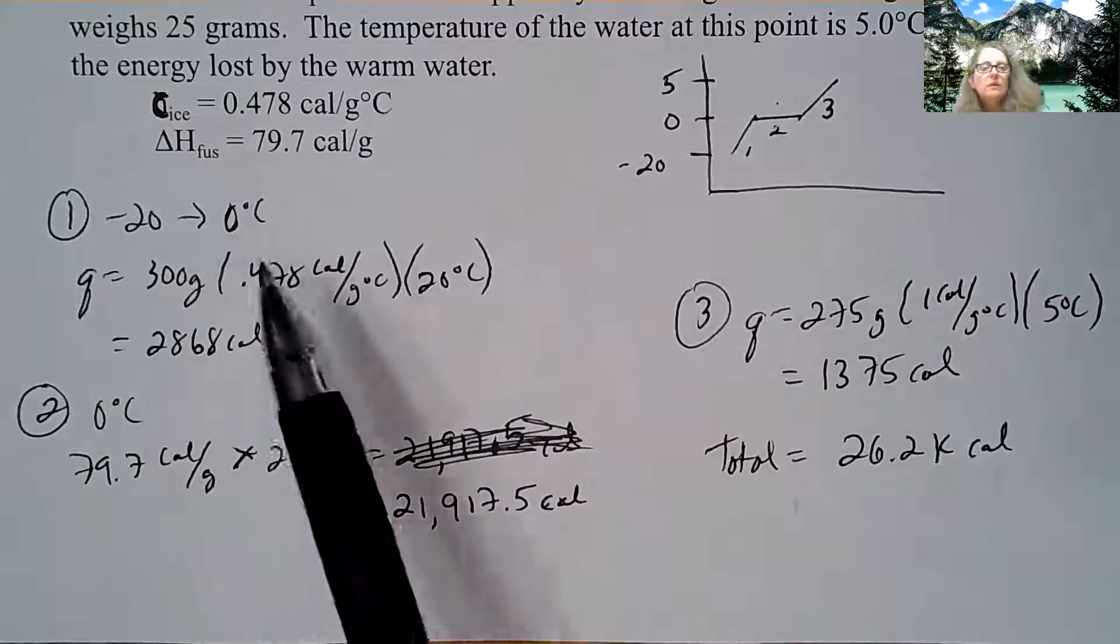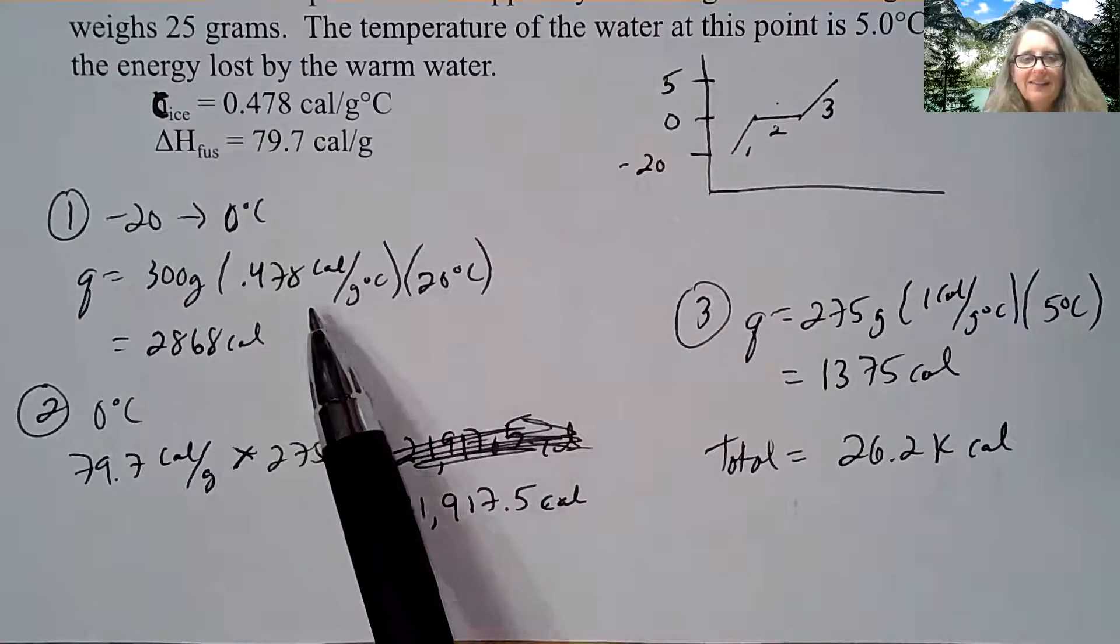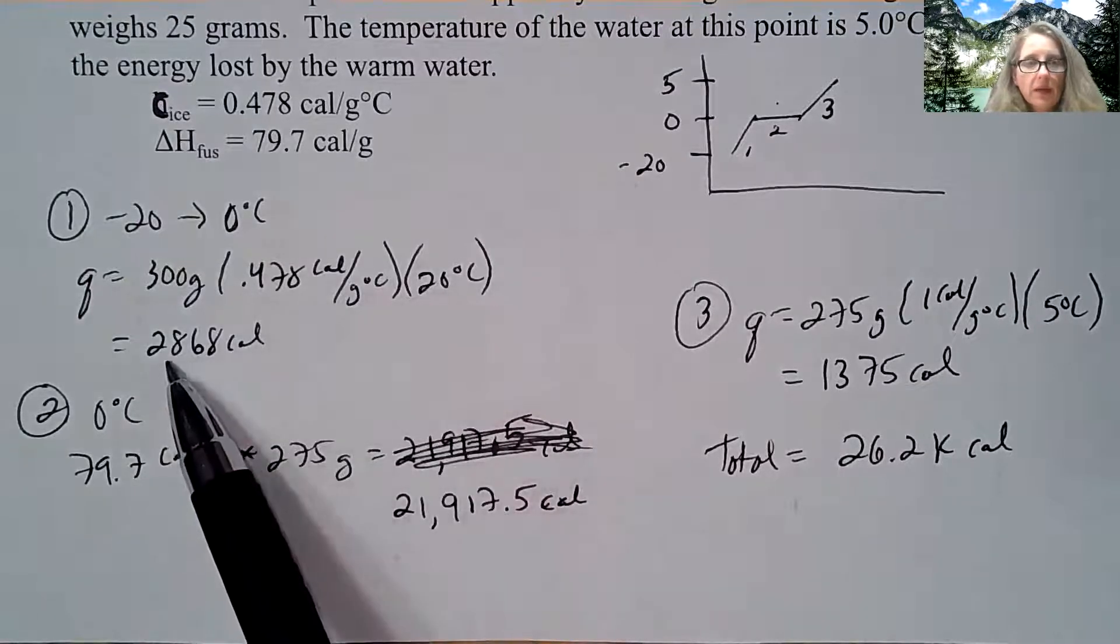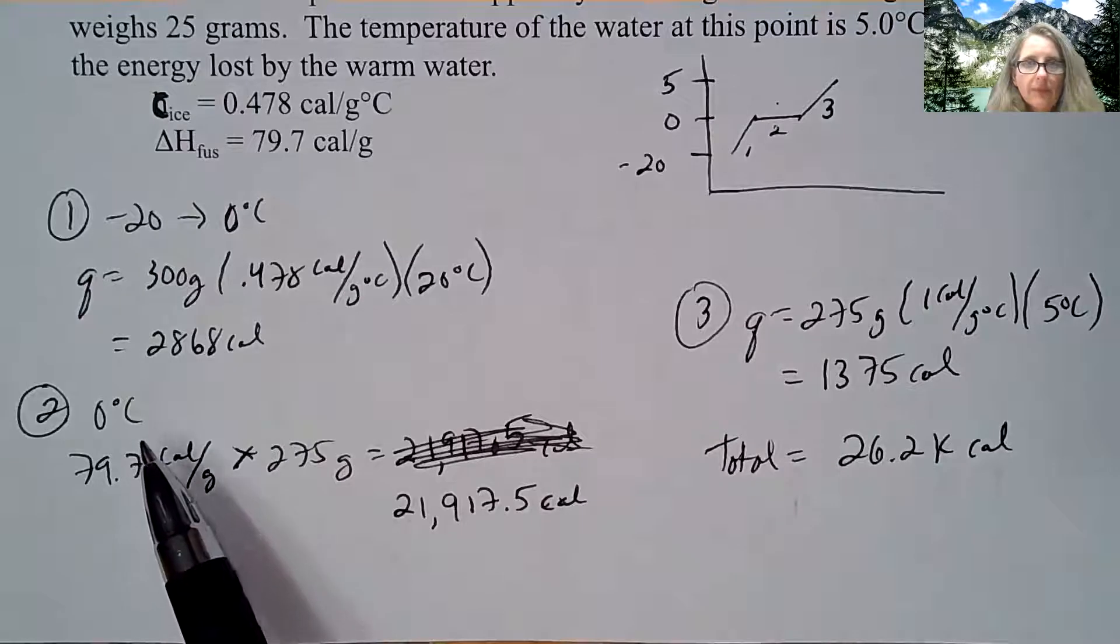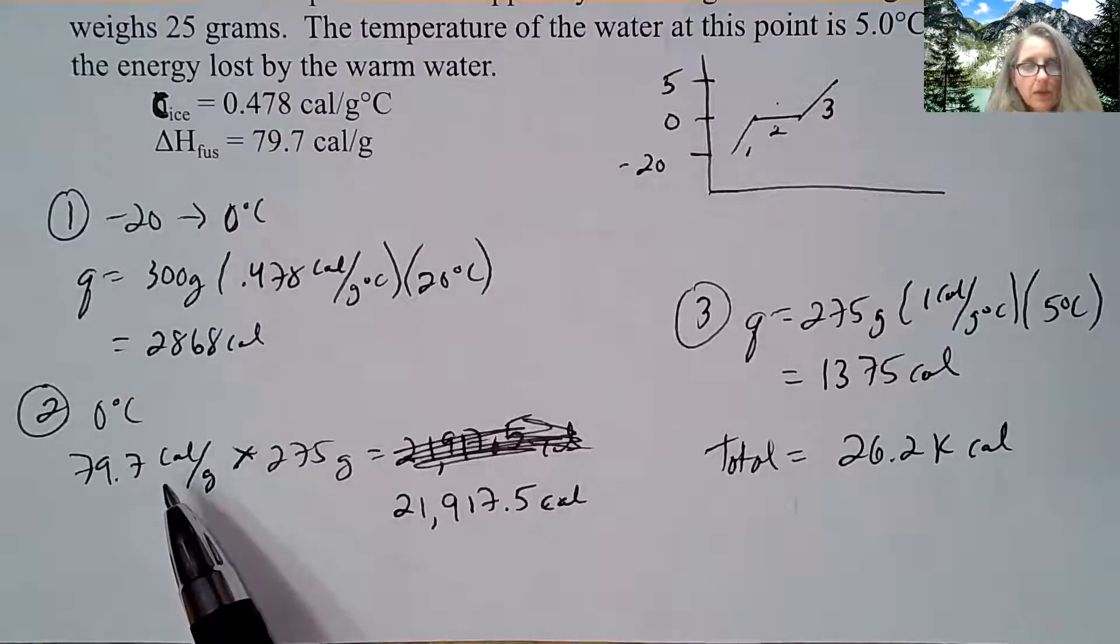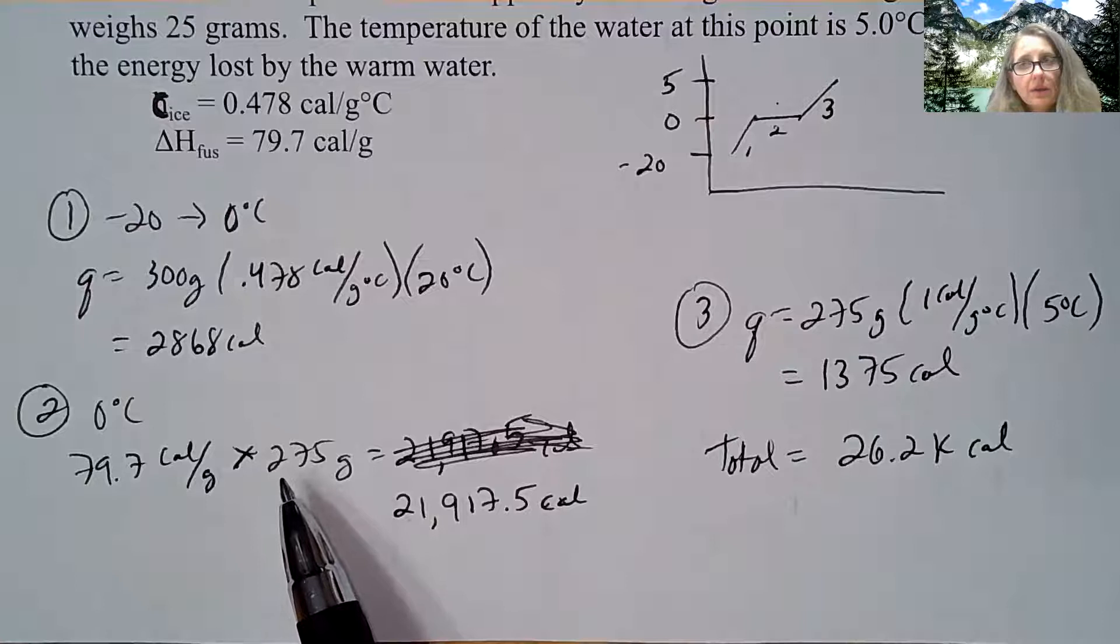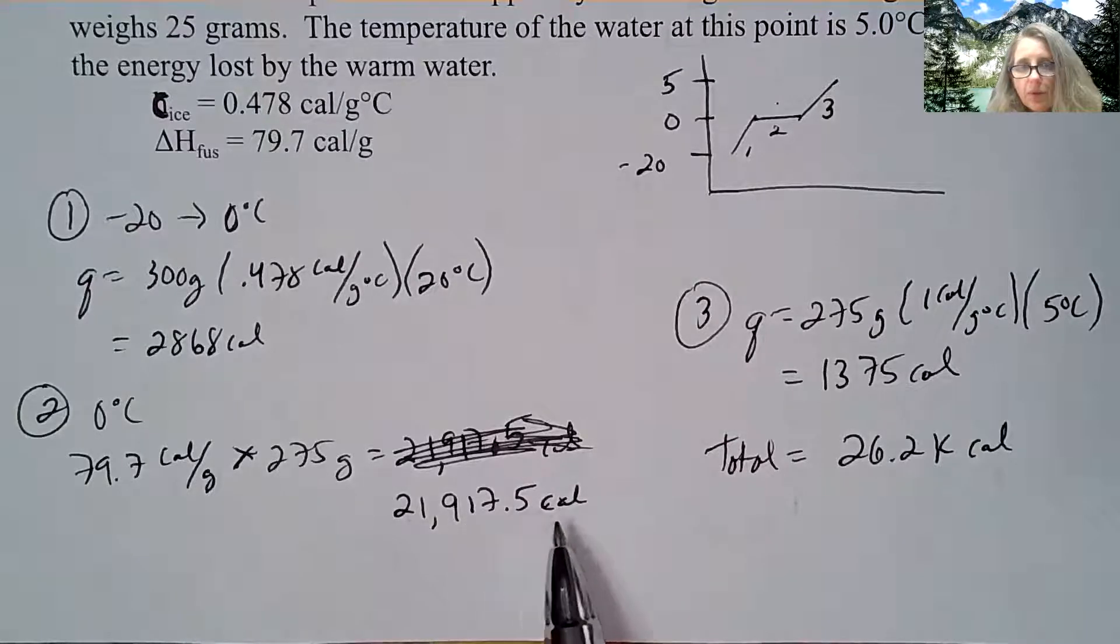So from negative 20 to zero, you would take the 300 grams times specific heat of ice and the temperature change. And again, I'm going to focus on negative or positive at the end. So I get 2,868 calories. Then at zero degrees Celsius, this is where it gets interesting. Because I took out 25 grams of ice, not all of it completely converted. So that's why I'm taking the specific heat of fusion of ice times the 275, not the 300, because not all of it was completely changed to liquid. So that's where I get 21,917.5 calories.